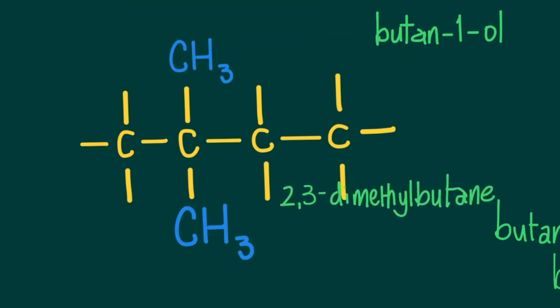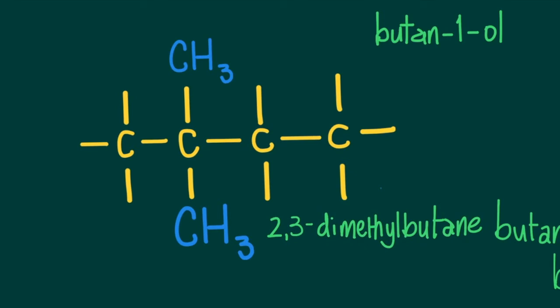Consider then what would 2,3-dimethylbutane look like? Well, it means that there's a methyl group on carbon two and there will be another one on carbon three. One, two, three, four, the longest straight chain, each of two and three containing a methyl group.